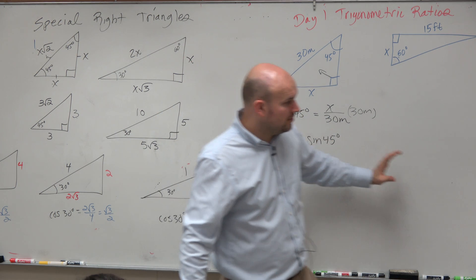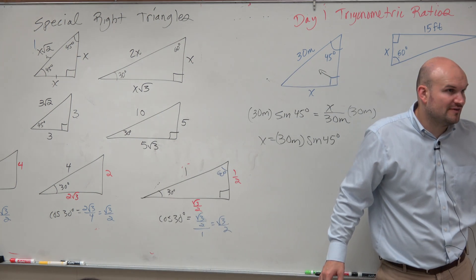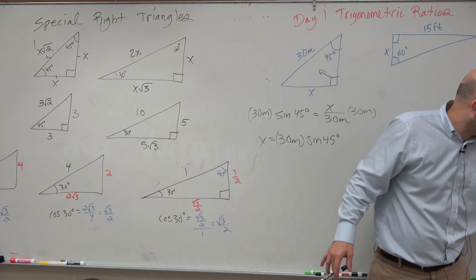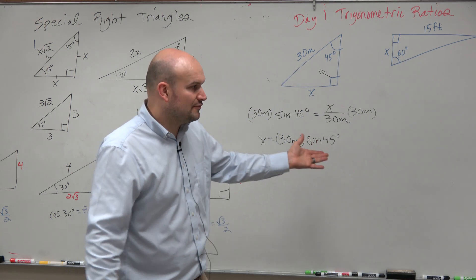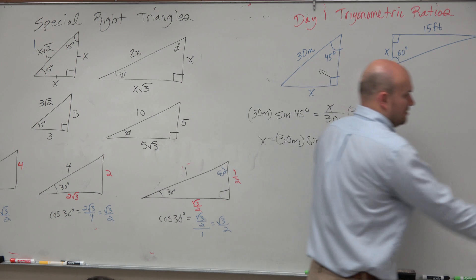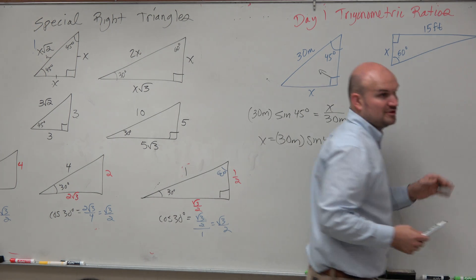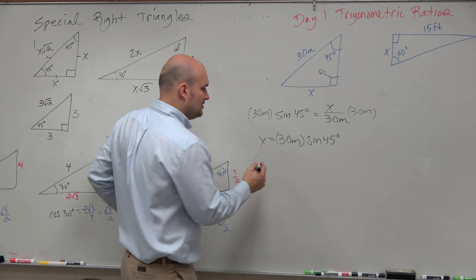They're the same. So if I want to figure out what the sine of 45 degrees is, what's the sine? Opposite over hypotenuse. So what's the sine of 45 degrees? Opposite over hypotenuse, which is just square root of 2 over 2.